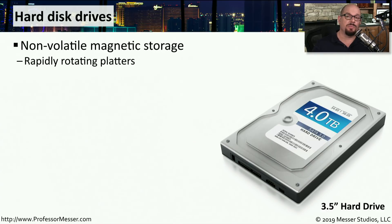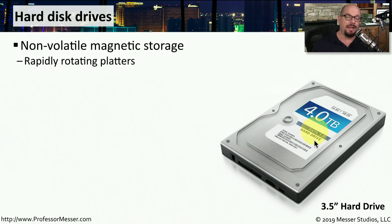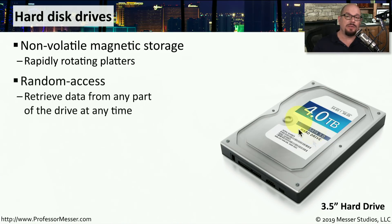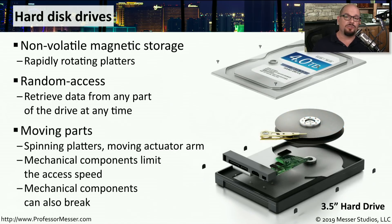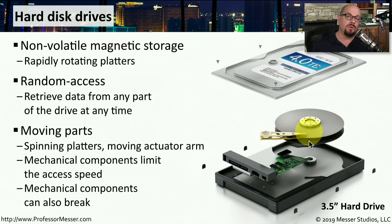If you need a device that can economically support a very large amount of storage, you may still be looking at the traditional hard disk drive. This is a spinning drive that has magnetic storage inside of it with rapidly rotating platters. It is a random access type of storage, which means you can access any data from any part of the drive at any time. Inside the drive are a number of moving parts — the platters spin very quickly, and there's an actuator arm that moves back and forth to read information from the magnetic platters. These moving parts are some of the biggest disadvantages: they limit how quickly you can access information, and they can break, meaning you would lose access to all the data on the drive.